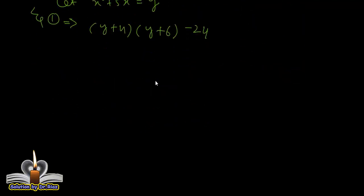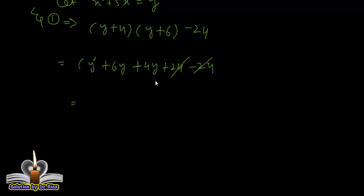اب ان brackets کو multiply کریں: y²+6y+4y+24 minus 24۔ Plus 24 اور minus 24 cancel out ہو جاتے ہیں۔ ہمارے پاس رہ جاتا ہے y²+10y۔ یہاں y common آ سکتا ہے: y(y+10) — factorization complete ہو گئی۔